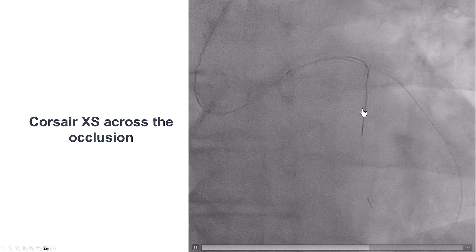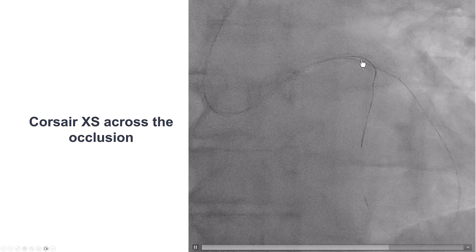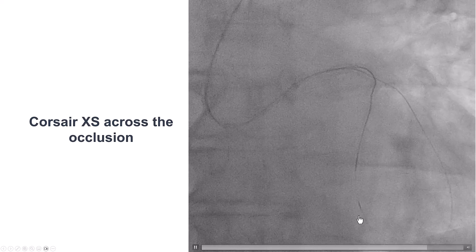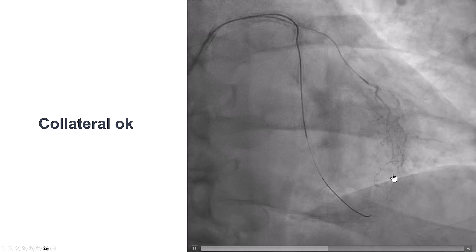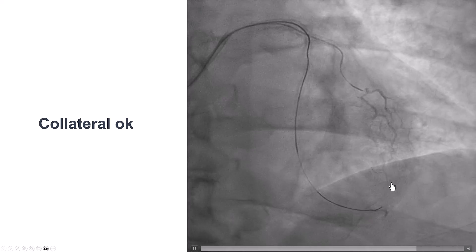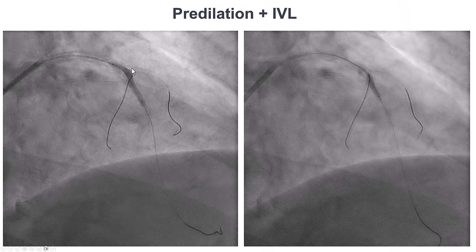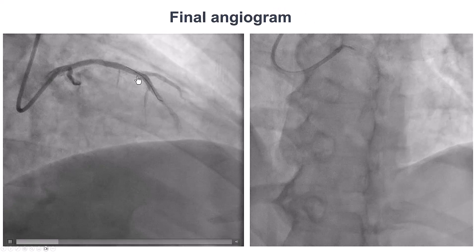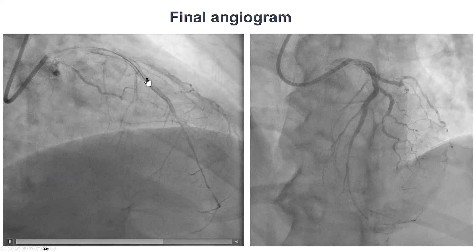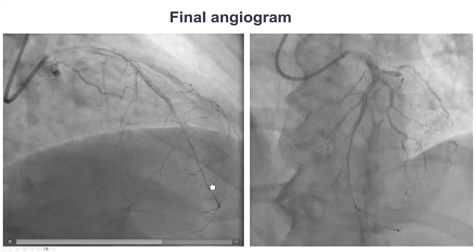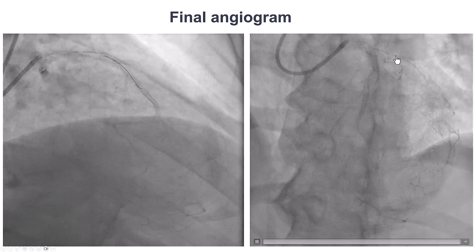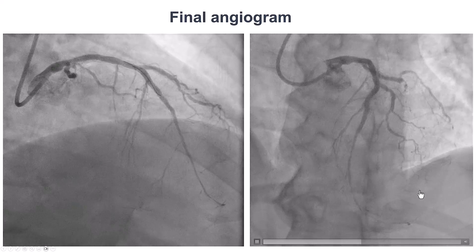We removed the retrograde guide wire and advanced an antegrade guide wire. We checked the collateral to confirm there was no perforation. We then pre-dilated. Due to heavy calcium, we performed intravascular lithotripsy, then placed stents in the mid and proximal LAD. The final result was excellent with TIMI 3 flow into the LAD and no issues with the epicardial collateral.